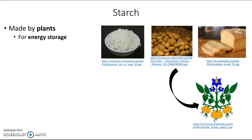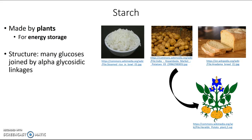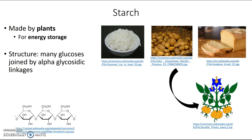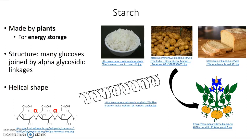In terms of the structure of starch, it's many glucoses linked by alpha glycosidic linkages. If we take a small section of starch, you can see those alpha glycosidic linkages, and because of them — as you'll recall — the molecule folds into a helical shape. So that's why starch looks like this.